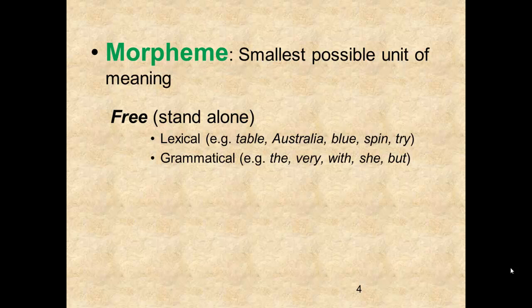Free grammatical morphemes are words such as "the," "very," "with," "she," and "but." These are the words that coincide with the grammatical categories we reviewed earlier.